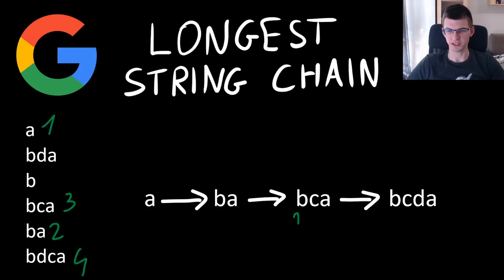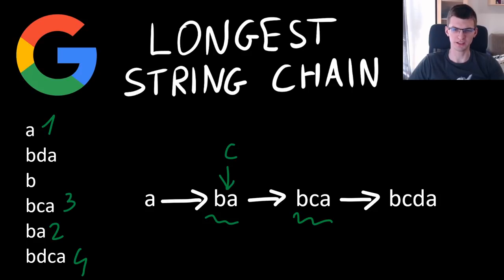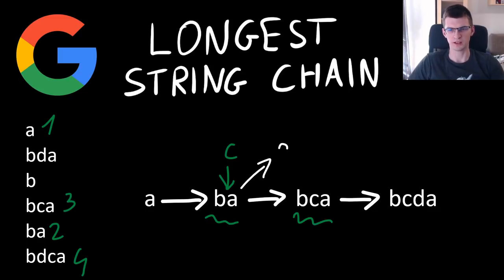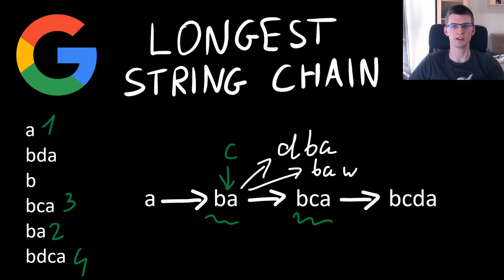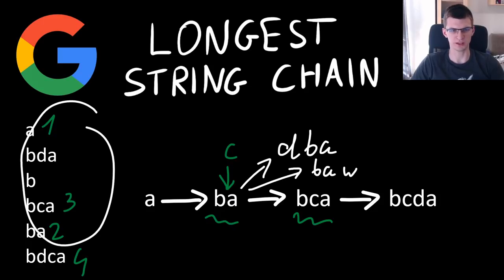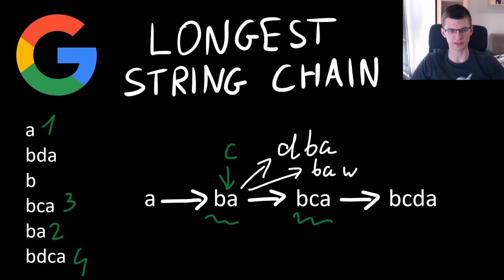For example, BCA can follow BA because we insert C right in the middle. It is allowed to add a letter anywhere, including the beginning and the end of a word. In particular, BA could be transformed to DBA or BAW — a lot of words — but of course they must exist in the input, and those two do not. There is no DBA here. The order of characters matters.